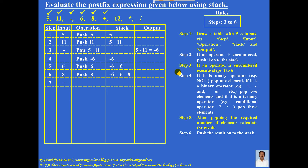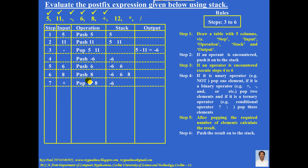The next input is plus — it's an operator. Three things must be done. First, plus is a binary operator, so pop two elements from the stack. After popping, the stack contains minus 6. Second, calculate the answer: left operand first, followed by operator, followed by right operand — so 6 plus 8 equals 14. Third, push 14 onto the stack, so the stack now contains minus 6 and 14.